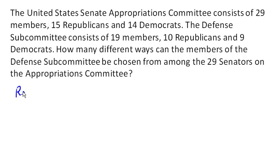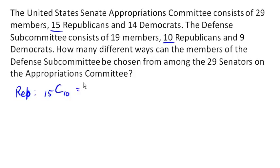For the Republicans, we have 15 Republicans overall, and 10 of them are going to end up on the subcommittee. So from the 15 Republicans, we're going to pick 10 of them, and order does not matter, so we're going to use combinations. That turns out to be 3,003.